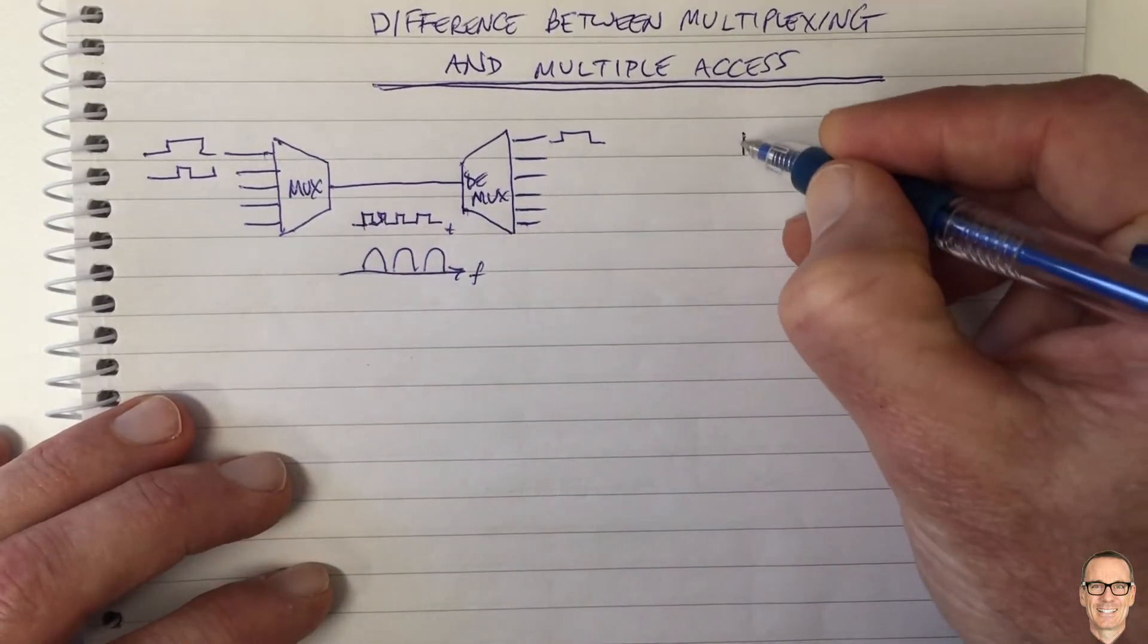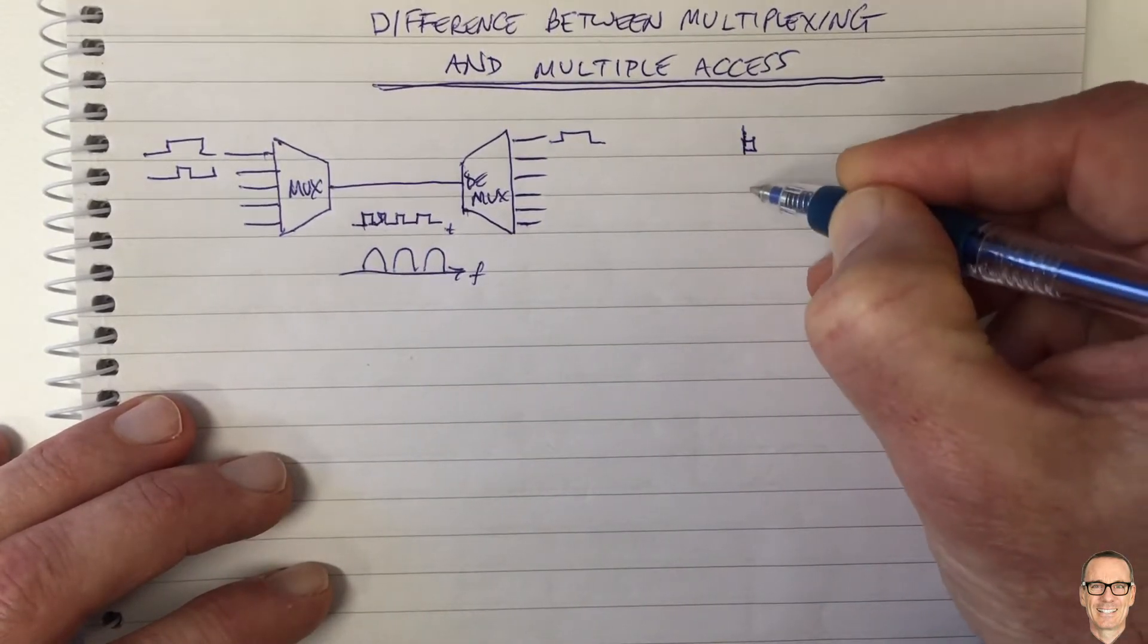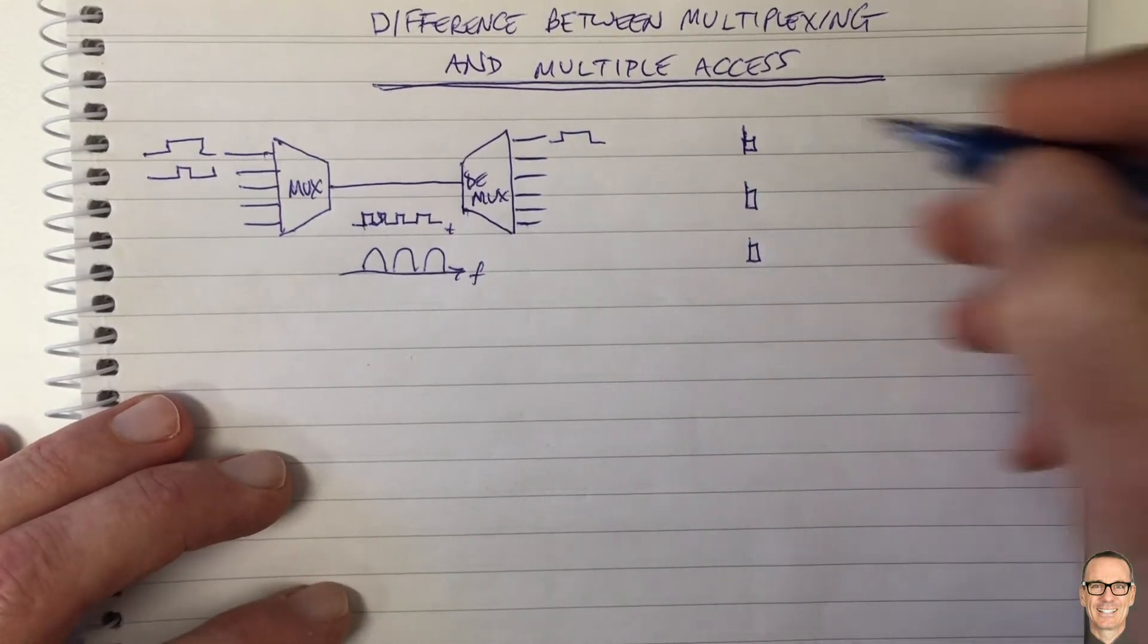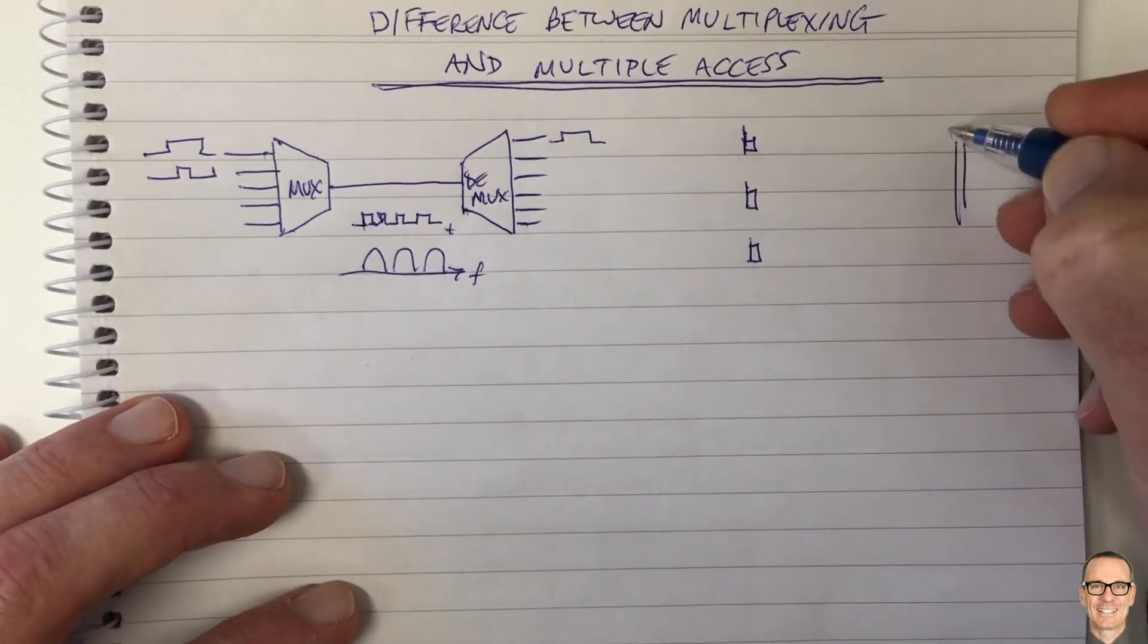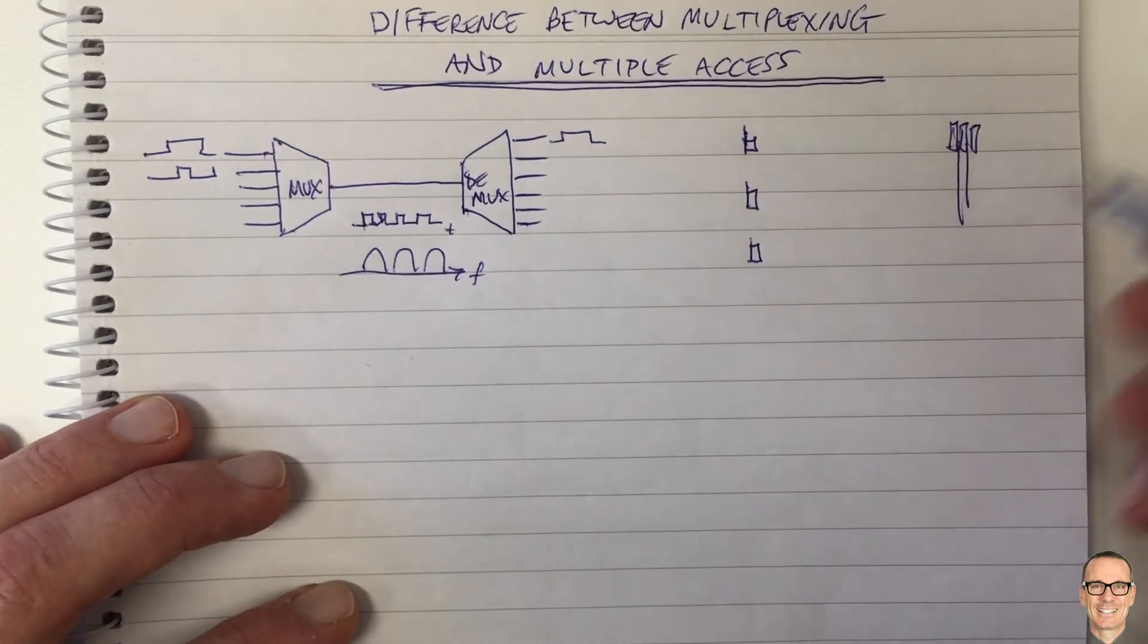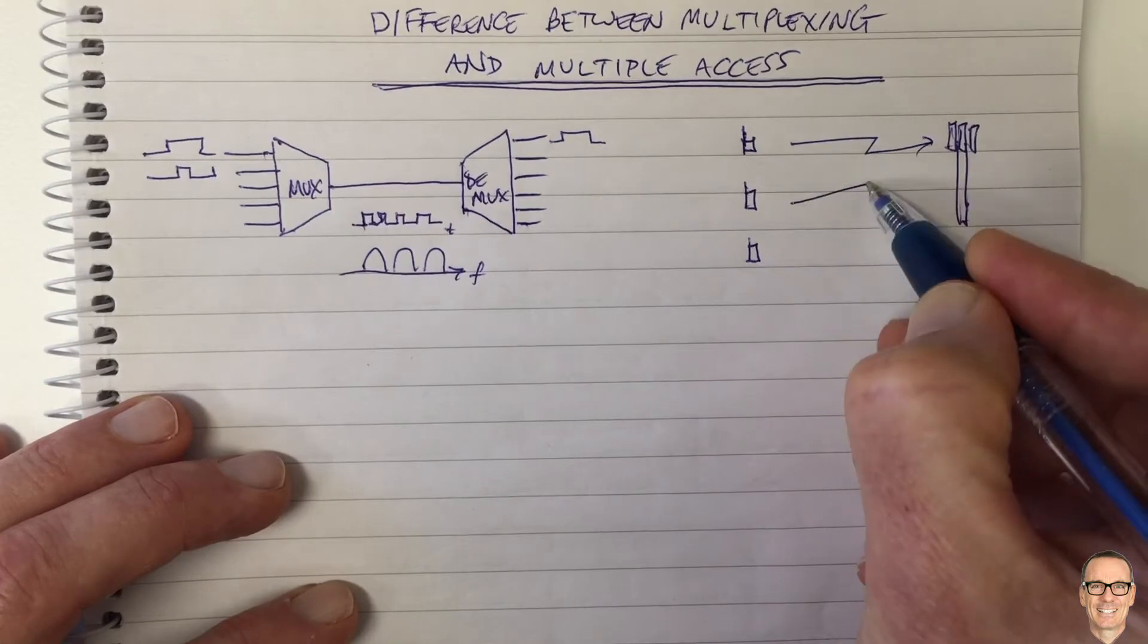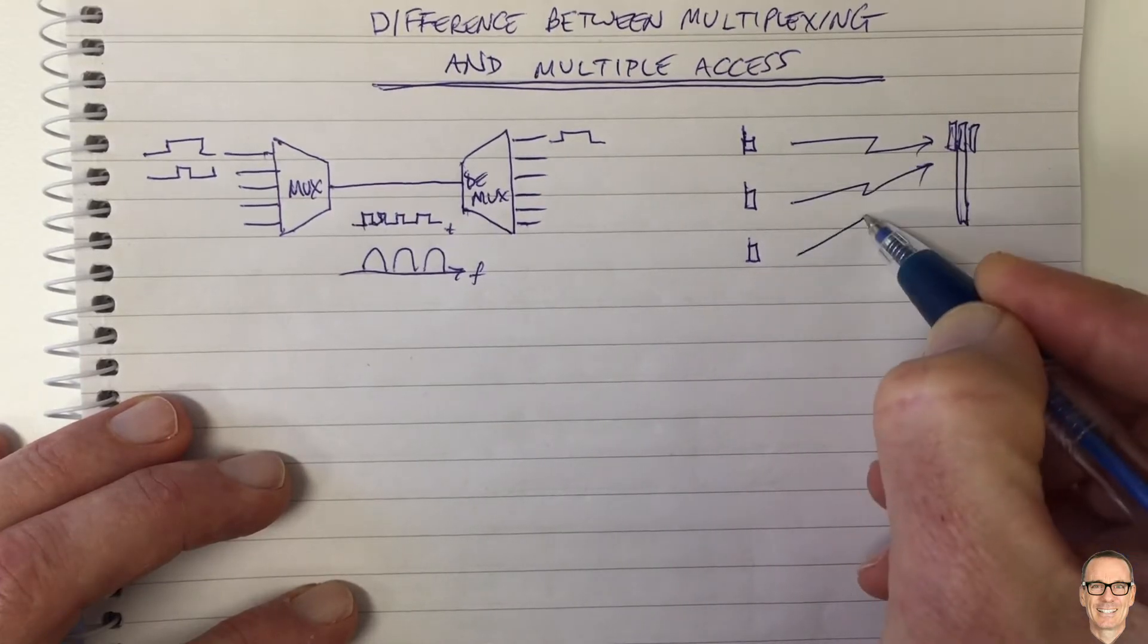And multiple access is the case where you don't have a single device that's putting all of those signals together. So let's say three mobile phones, here's a mobile phone tower, and they are all accessing the air channel between the mobile devices and the tower.